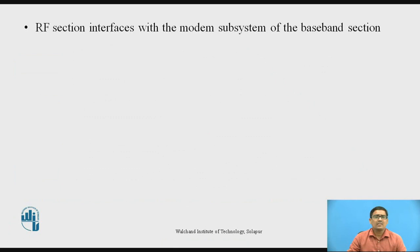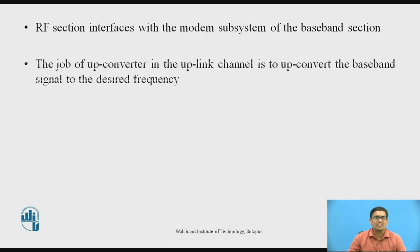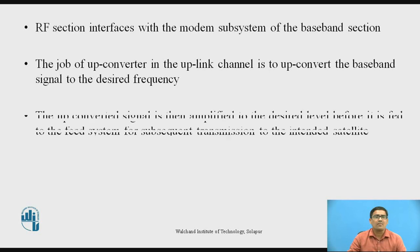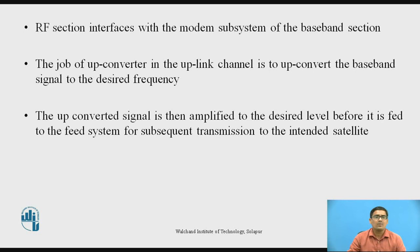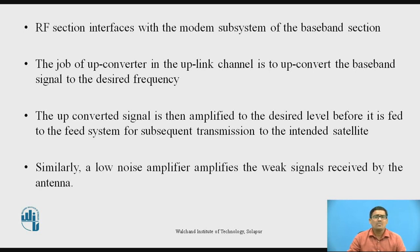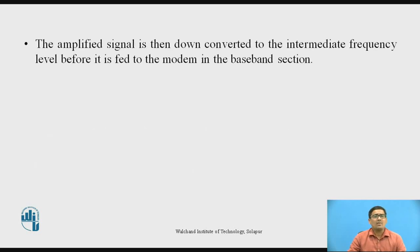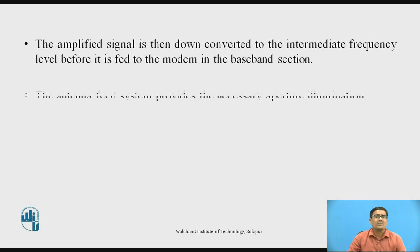The RF section interfaces with the modem subsystem of the baseband section. The job of the upconverter in the uplink channel is to upconvert the baseband signal to the desired frequency. The upconverted signal is then amplified to the desired level before it is fed to the feed system for subsequent transmission to the intended satellite. Similarly, a low noise amplifier amplifies the weak signal received by the antenna. The amplified signal is then downconverted to the IF (intermediate frequency) level before it is fed to the modem in the baseband section.